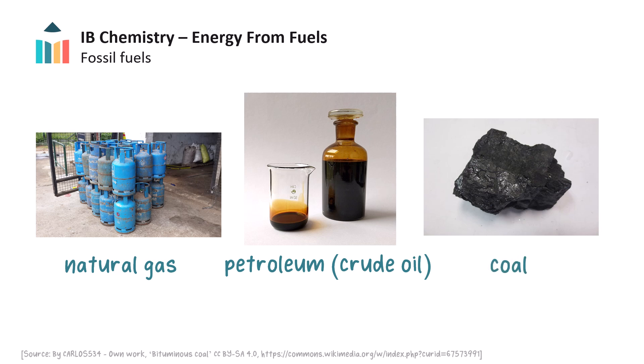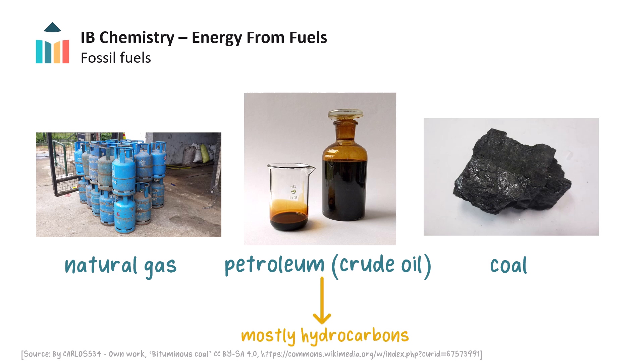Coal is the most abundant of the fossil fuels. It is a black sedimentary rock composed mostly of carbon. Crude oil, also known as petroleum, is drilled and extracted from between layers of sedimentary rock deep under the ground. It is perhaps the most important fossil fuel, since the raw materials derived from it are used as chemical feedstocks for the production of polymers, dyes, solvents, pharmaceuticals, and fertilizers.